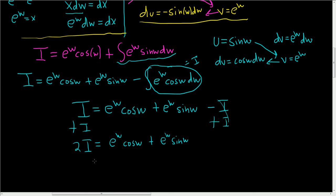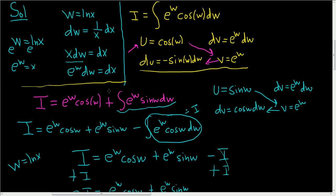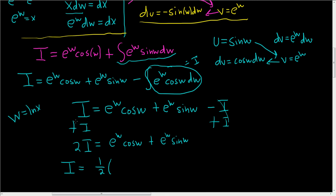And then we'll divide everything by 2. So i is equal to, I'll put the one half outside. And then we have e to the w. But what was w? w, at the beginning of the problem, was the natural log of x, I believe. Let's go back up and check just to be 100% positive. It is. It's right up here. W was the natural log of x. So we end up with e to the natural log of x, and then we get cosine of the natural log of x plus e to the natural log of x, sine natural log of x. And then we have our constant.